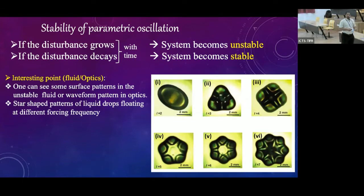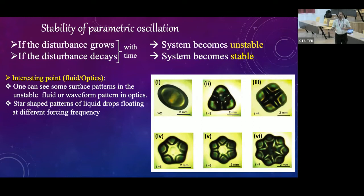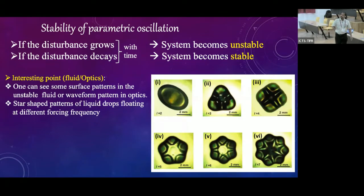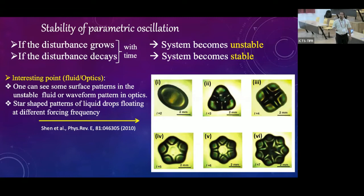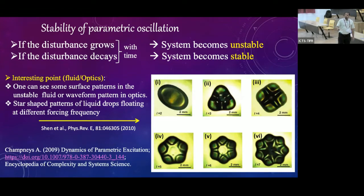Numerous day-to-day examples can be seen — in classical fluids and optics. In the case of fluids you get surface patterns, and in optics you get wavefront patterns. Depending upon the forcing frequency, you will get different patterns: quadrupole, triangular, square — different polygonal structures. There are very good articles on this, including a PRE paper and a review article those interested can look at. Now let us look again at the equations for parametric oscillation and what resonance means here.